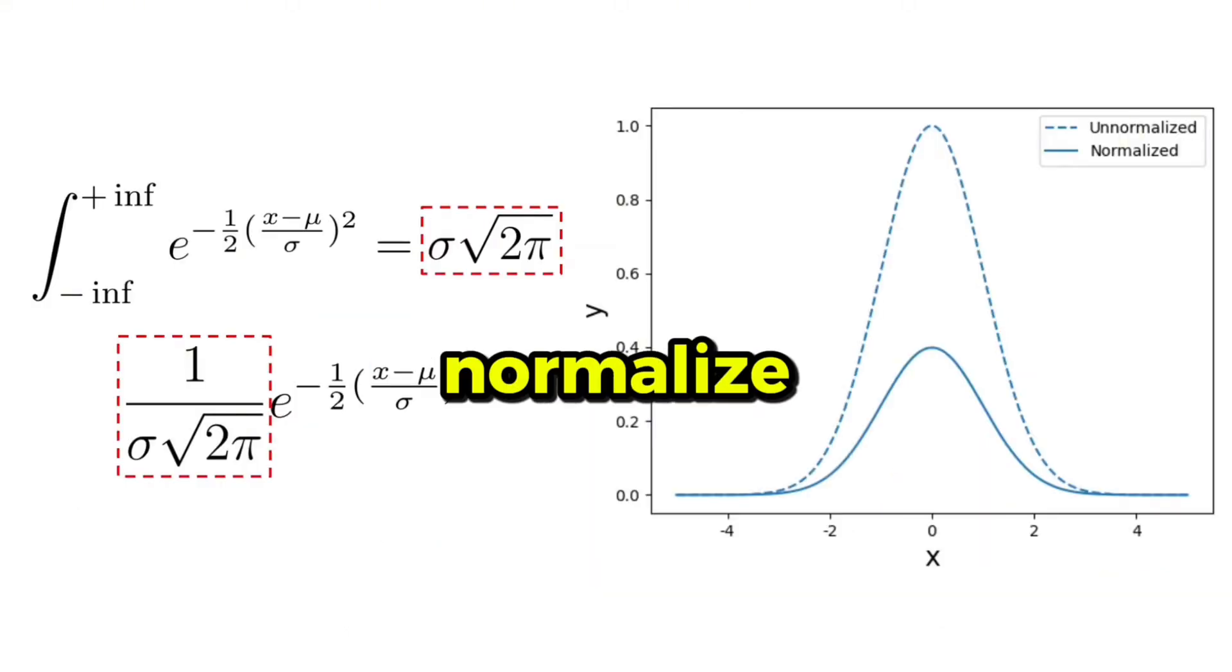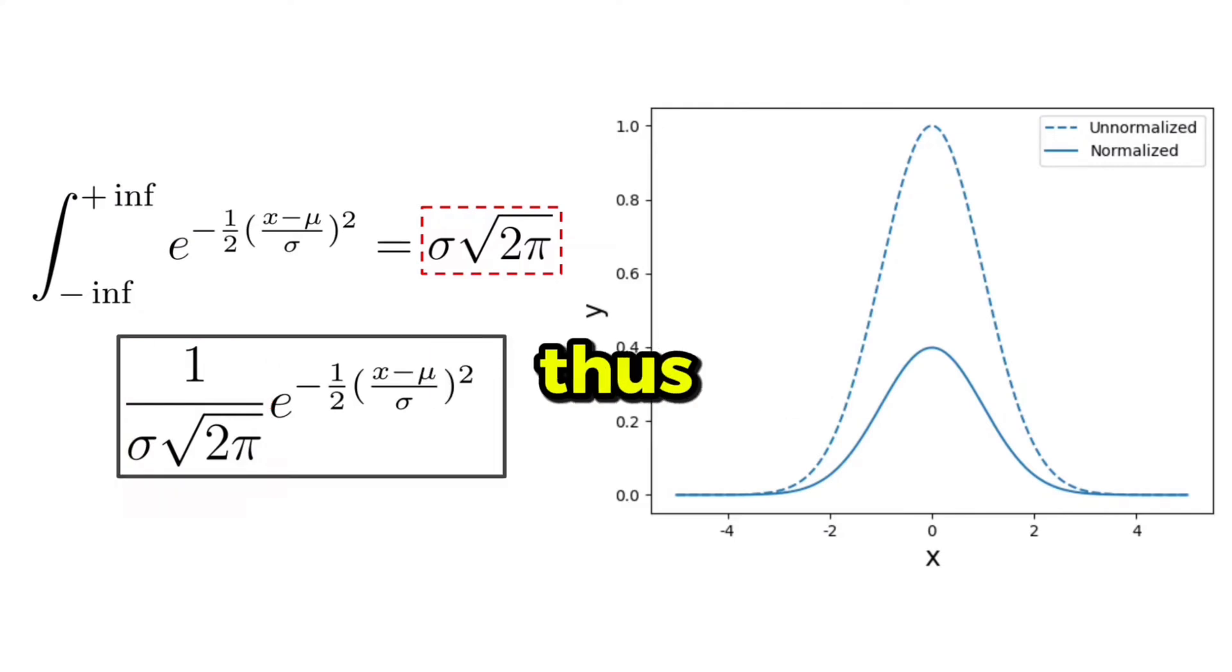The last building block is to normalize our equation and make it a probability distribution. Because when you integrate from minus infinity to plus infinity, we don't obtain 1, but sigma multiplied by the square root of pi. So we have to divide by this term to obtain a probability distribution. And thus, we have finally obtained a normal distribution.